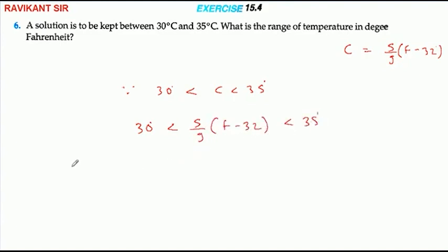Now we multiply by 9/5 on both sides. 30 × 9/5 < 5/9(F - 32) × 9/5.